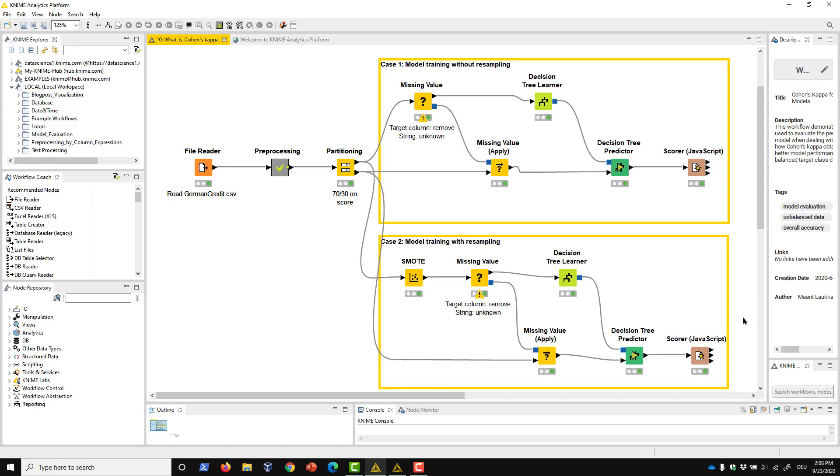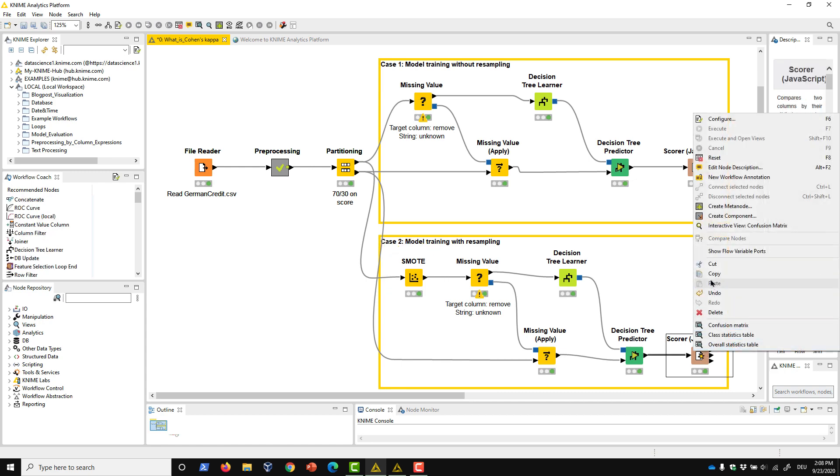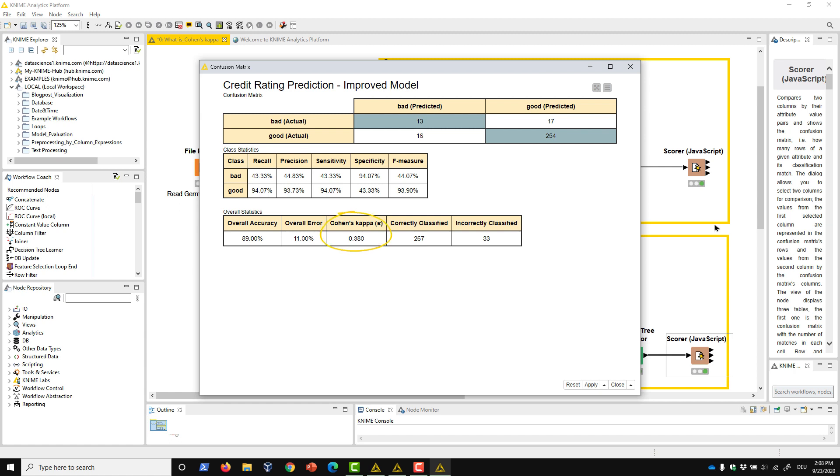Now let's go back to our example workflow. This time, in this part of the workflow branch, we try to improve the performance of the decision tree model by resampling the training data. The Cohen's kappa value is higher for this model, 0.380, than it was for the first model, 0.279. However, the model's better performance is not indicated by the overall accuracy that didn't change at all. Cohen's kappa is therefore recommended to evaluate the performance of a classification model when the target classes are unbalanced.